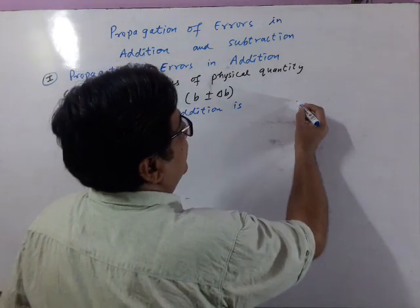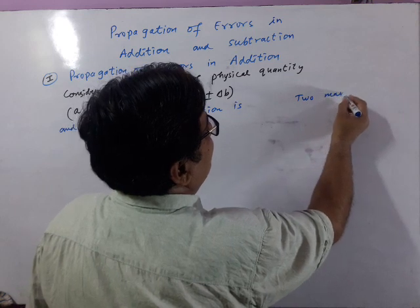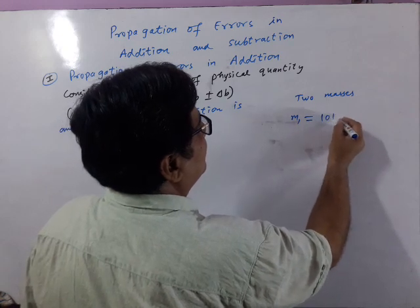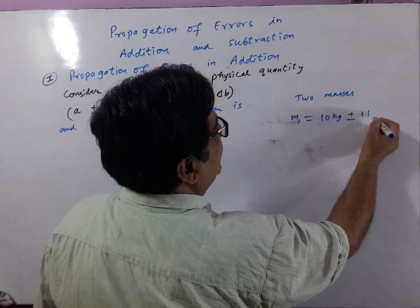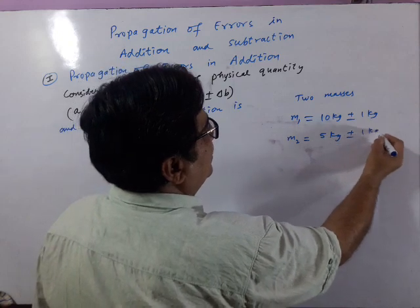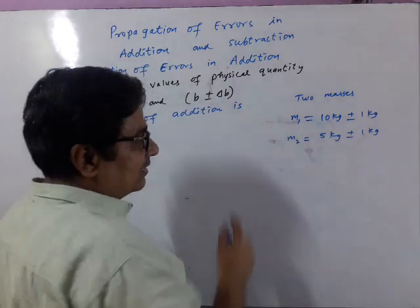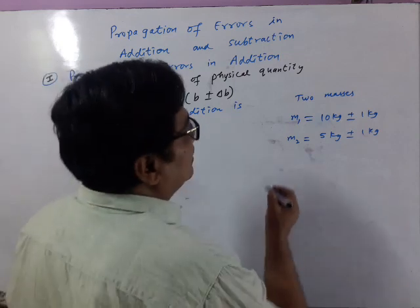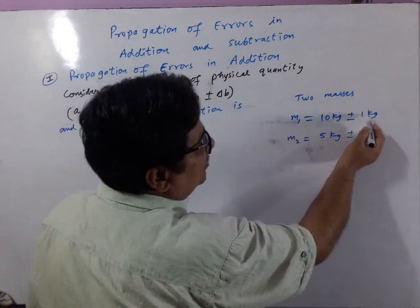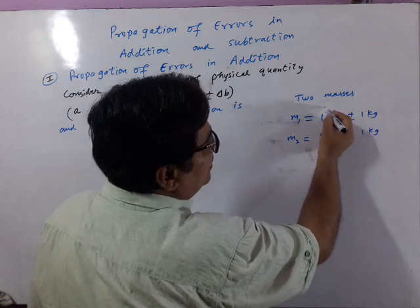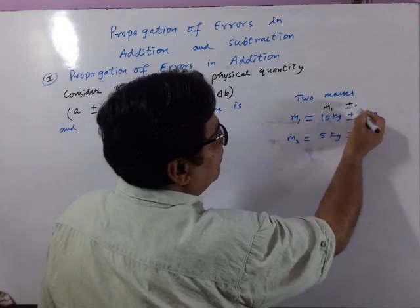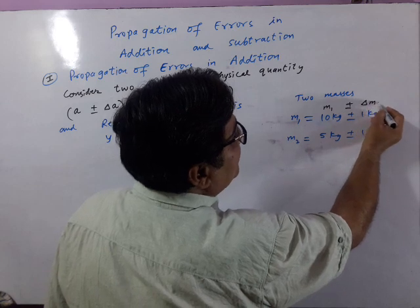See this example: if two masses are given, M1 is 10 kg plus-minus 1 kg, and M2 is 5 kg plus-minus 1 kg. If I say M1 is 10 kg plus-minus 1 kg, it means 10 kg is the actual value or mean value of M1. And after plus-minus, this is called the mean absolute error, or error in M1.